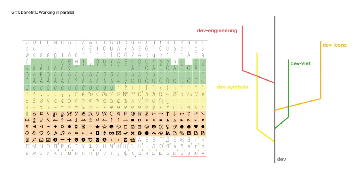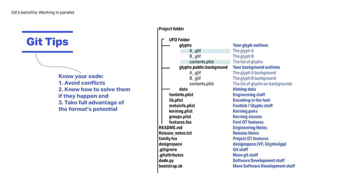It is important to know your code — to understand the UFO file structure, what each file contains, and how files relate to each other. For example, if you want to commit the addition of some glyph files you need to remember to also update the contents plist file. Knowing your files lets you avoid conflicts, know how to solve them if they happen, and take full advantage of the format's potential.